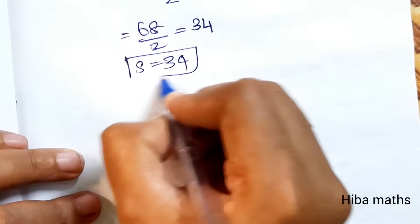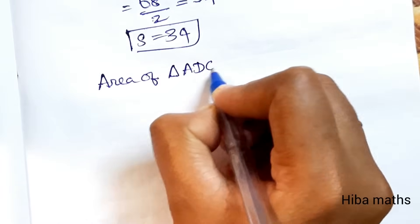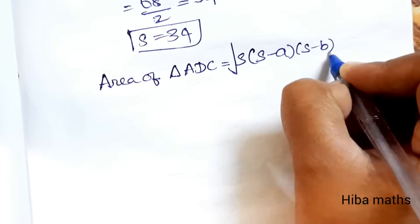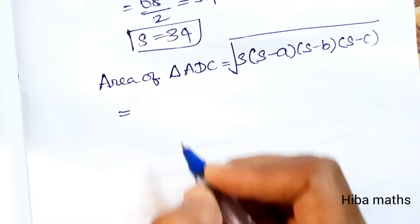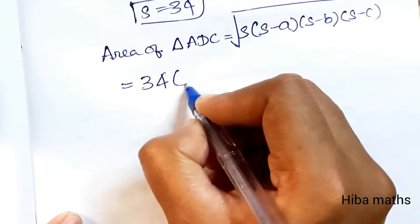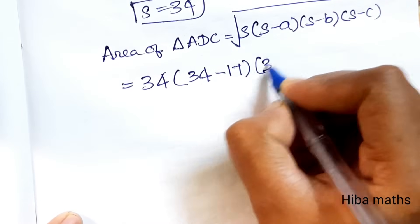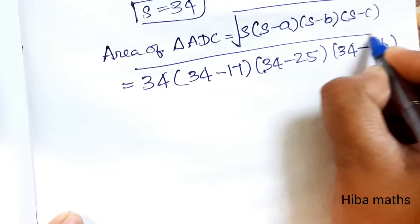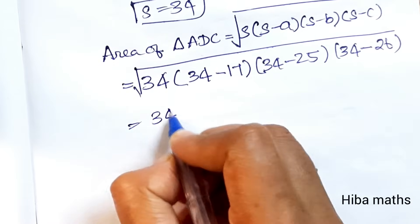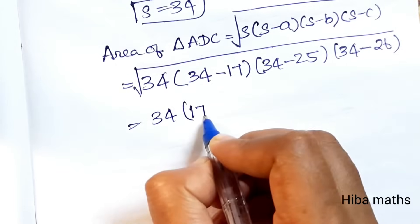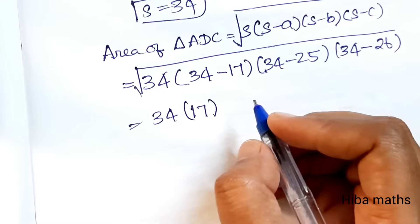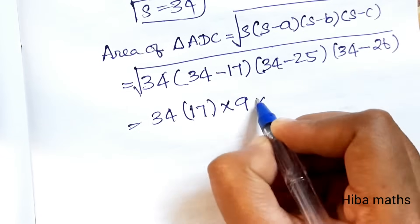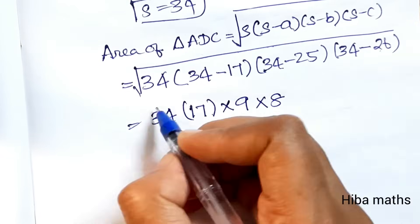Substituting into Heron's formula: Area of triangle ADC = √(s × (s−a) × (s−b) × (s−c)). With s = 34: s − a = 34 − 17 = 17, s − b = 34 − 25 = 9, s − c = 34 − 26 = 8.